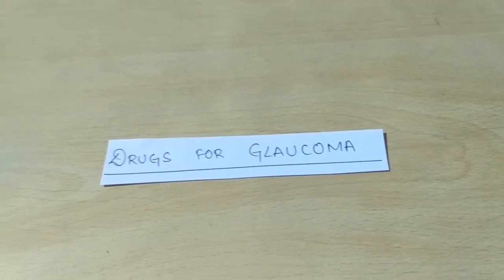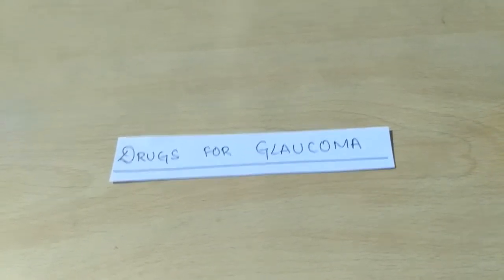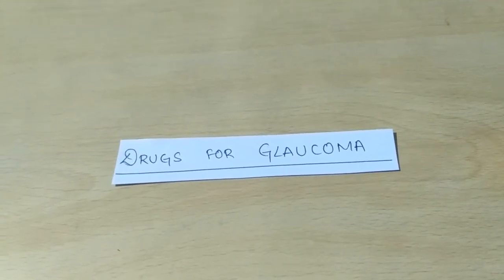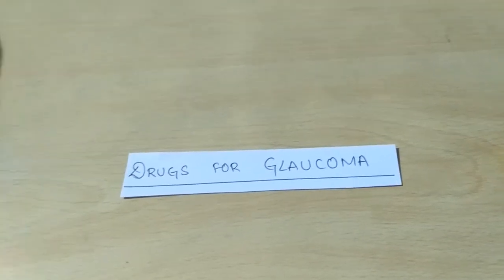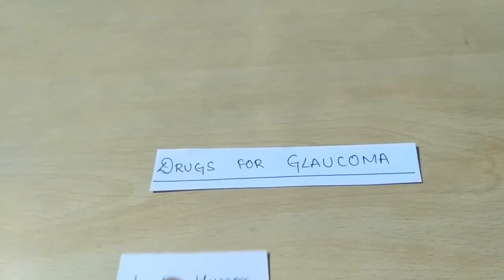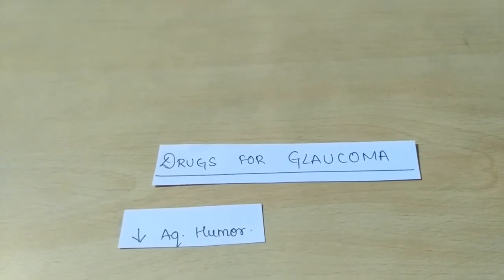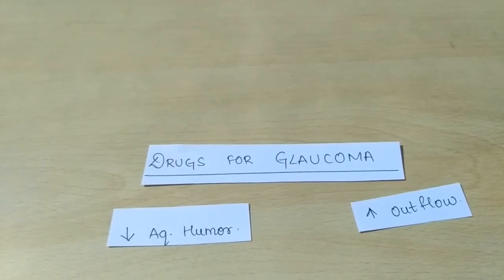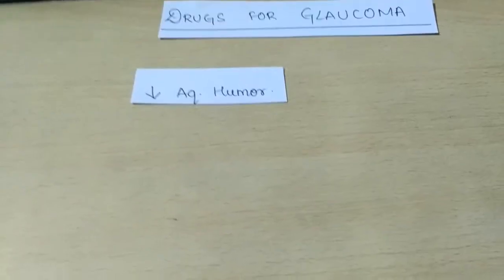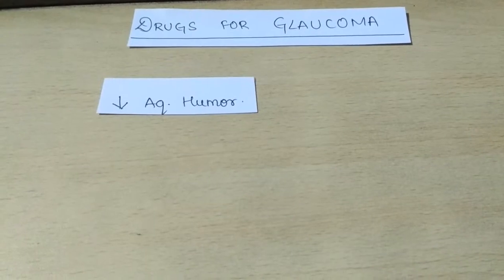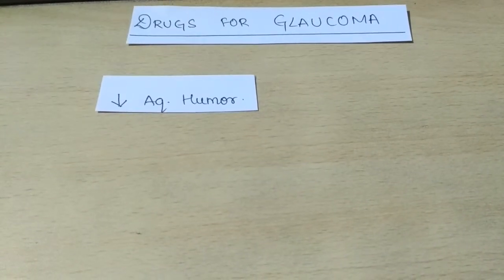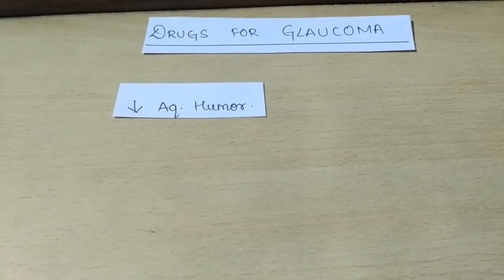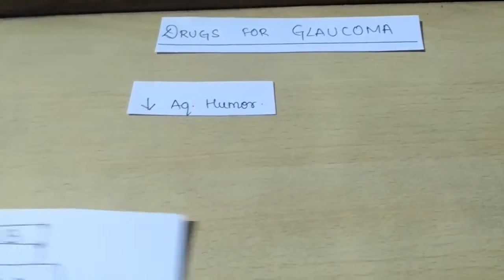Hello friends, today we are going to see the drugs for glaucoma. Glaucoma is a condition when the intraocular pressure rises more than 21 mmHg. The two mechanisms by which we can treat glaucoma are by decreasing the aqueous humor and the other is by increasing the outflow. In this particular video we are going to cover the drugs which decrease the aqueous humor.